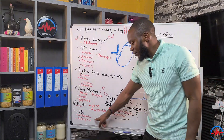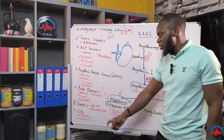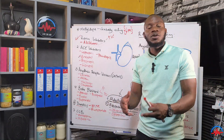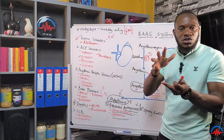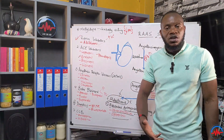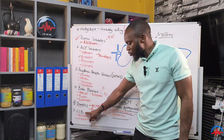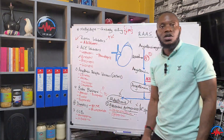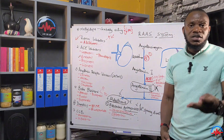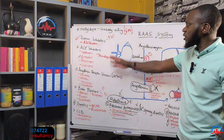Drugs ending in '-pine' come under the calcium channel blockers — nifedipine, amlodipine. For people consuming large amounts of calcium supplements — pregnant women, older people — this is a danger: calcium overload in the bloodstream causes vasoconstriction and increased blood pressure. It's counterproductive to give older people with hypertension calcium supplements for the bones, because the calcium raises blood pressure and then you need a calcium channel blocker to counteract it.